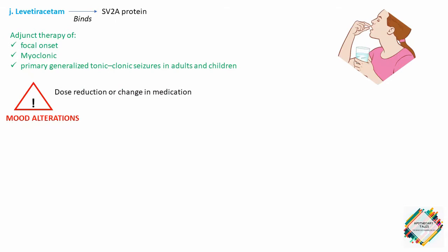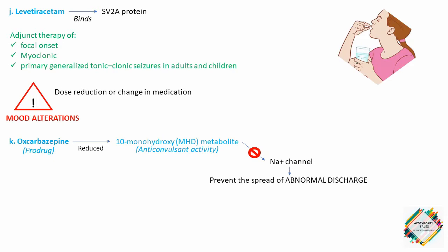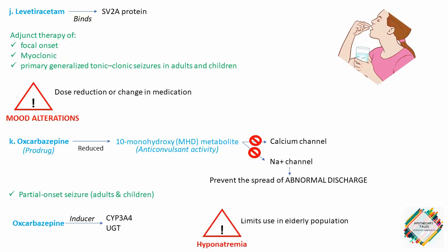The next drug is oxcarbazepine. This is actually a prodrug that is rapidly reduced to the 10-monohydroxy metabolite, which is responsible for its anticonvulsant activity. This 10-monohydroxy metabolite blocks the sodium channels, preventing the spread of abnormal discharge. It's also thought to modulate calcium channels. It is approved for use in adults and children with partial onset seizures. Oxcarbazepine is a less potent inducer of cytochrome 3A4 and UGT than carbamazepine. The adverse effect of hyponatremia limits its use in the elderly population.